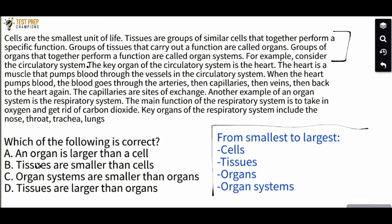Basically, if we go through the options: D says tissues are larger than organs — but from our ordered list, organs are actually bigger than tissues, so D is out. C says organ systems are smaller than organs — actually, organ systems appear further down the list, so they are larger than organs. B says tissues are smaller than cells — that's also incorrect. So A is the right answer: an organ is larger than a cell. A is correct.